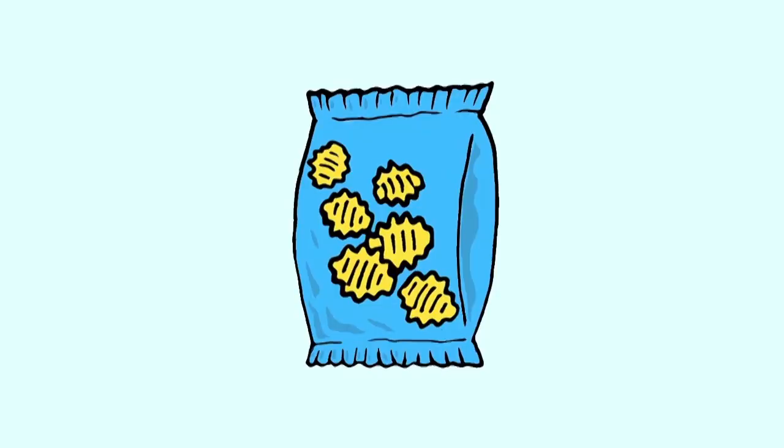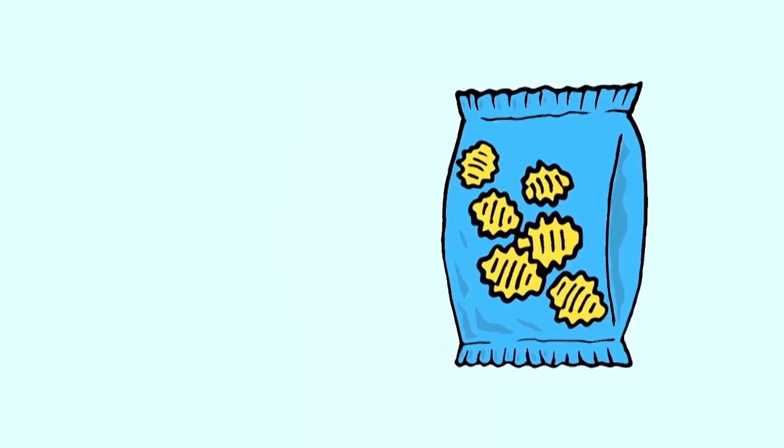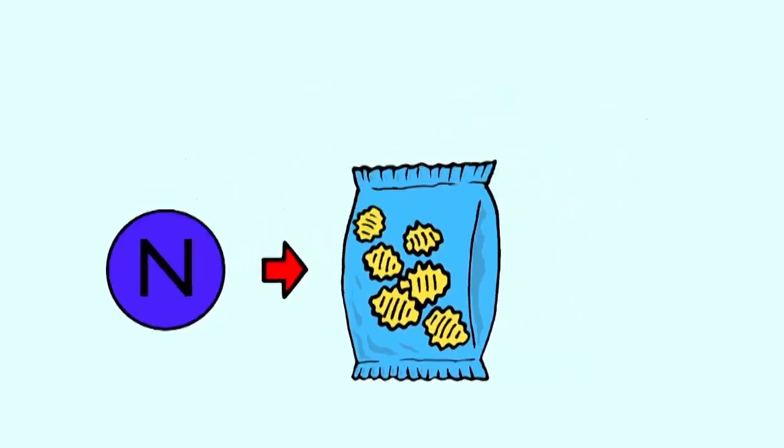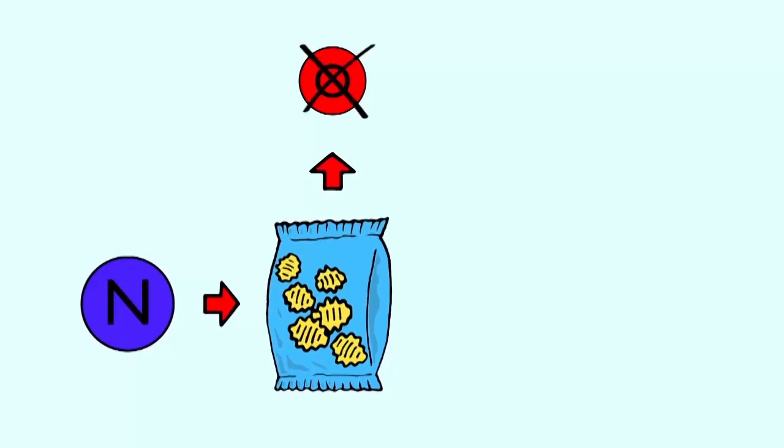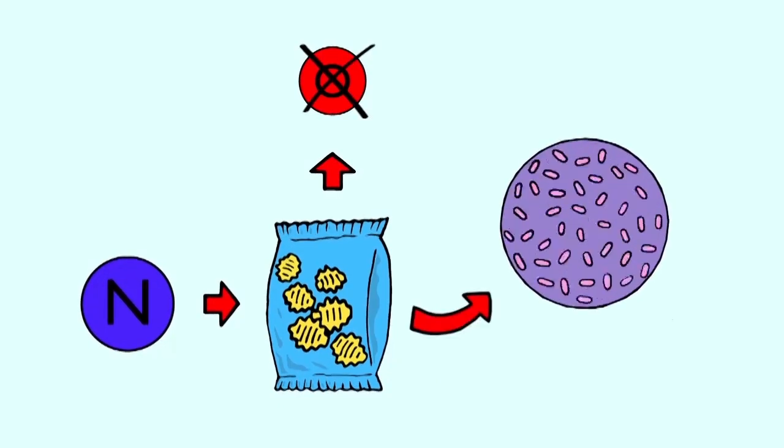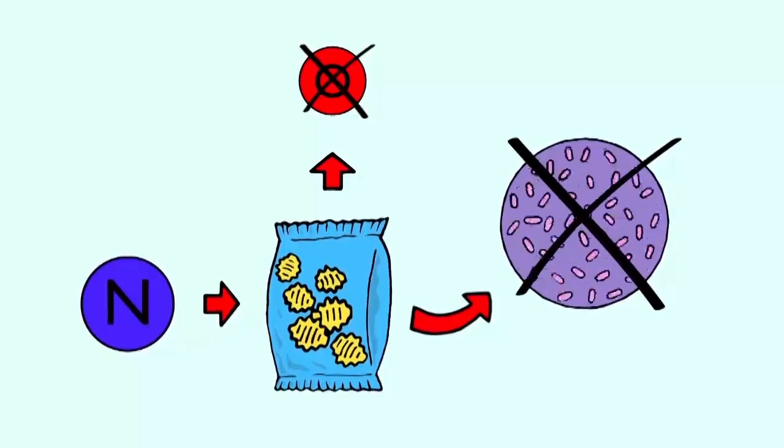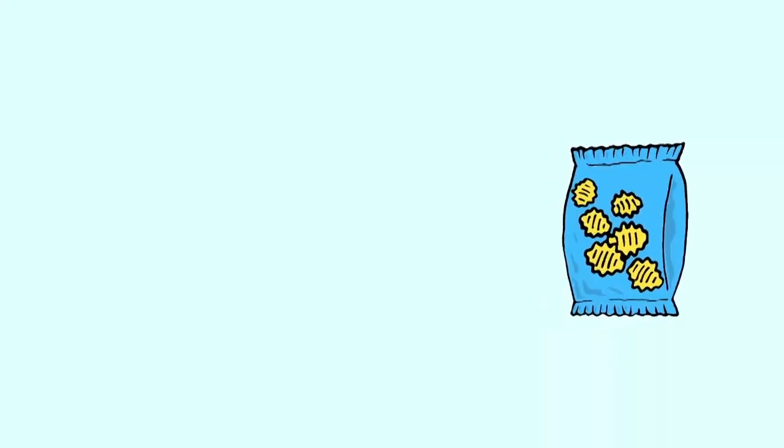The next time you purchase a bag of chips or crisps, notice how the bag is rather puffy. The gas inside the bag is actually nitrogen. As much oxygen as possible is removed to prevent bacteria from growing, thereby increasing its shelf life. In fact, nitrogen is very important in the packaging of many food products, from fruits and vegetables to processed foods such as your bag of chips or crisps. Without it, spoilage will occur much quicker leading to increased waste production.